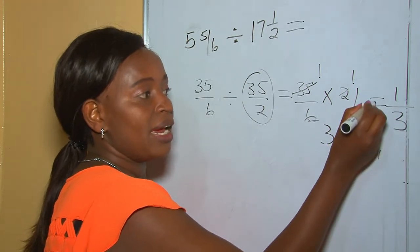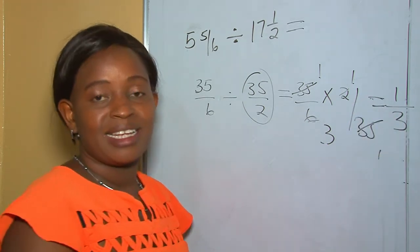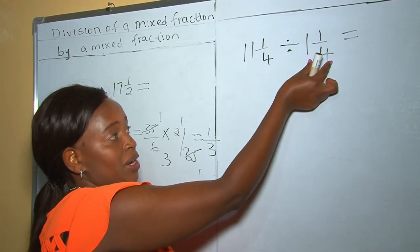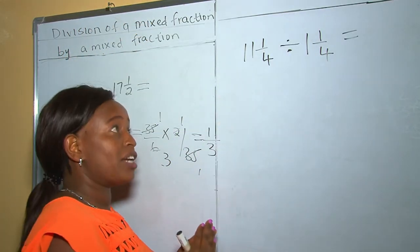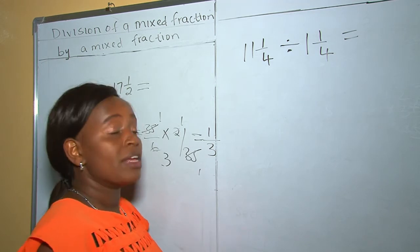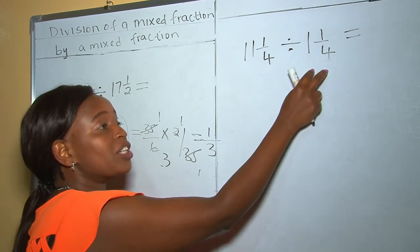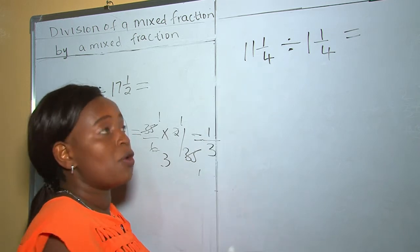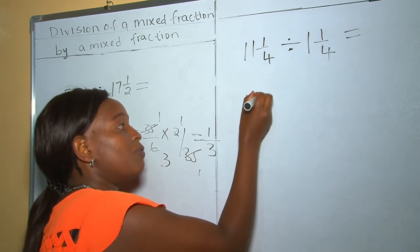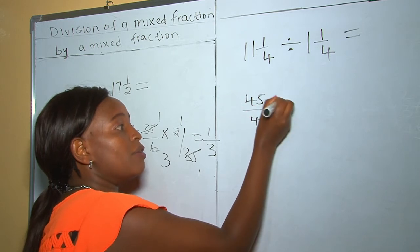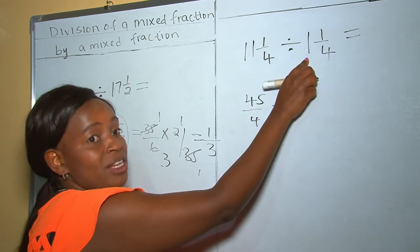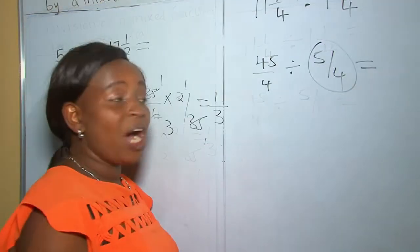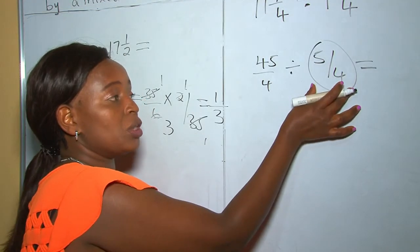Let's do another example. This is a mixed fraction and this is a mixed fraction. When dividing a mixed fraction by a mixed fraction, the first step is to change them into improper fractions. So 4 times 11 is 44, plus 1 is 45, over 4. Divided by: 4 times 1 is 4, plus 1 is 5, over 4.